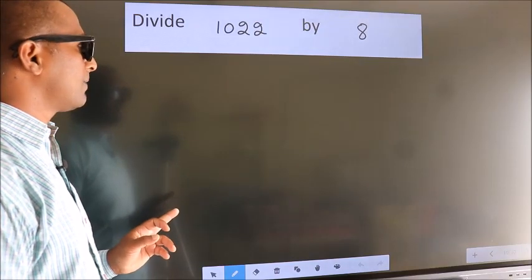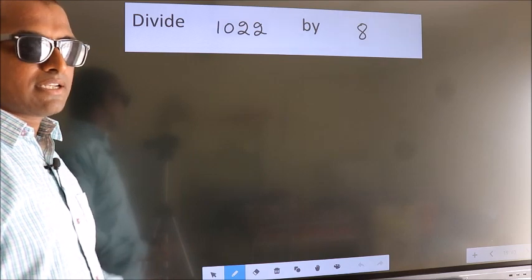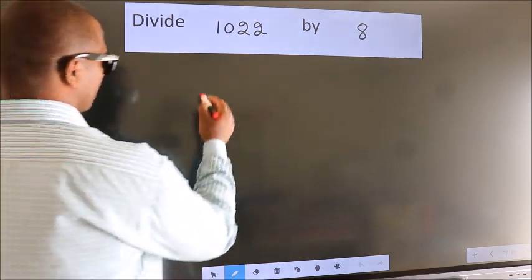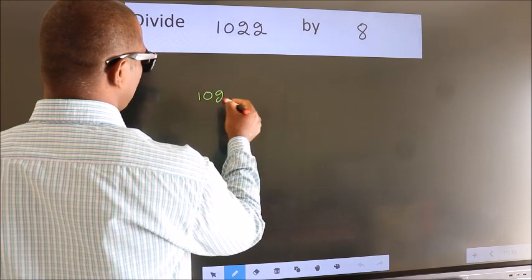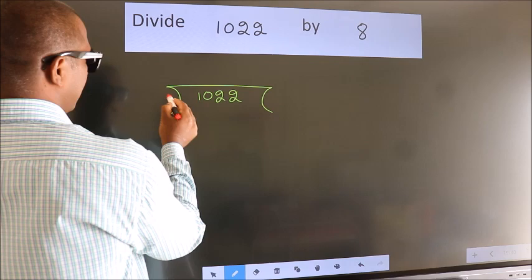Divide 1022 by 8. To do this division, we should frame it in this way: 1022 here, 8 here.